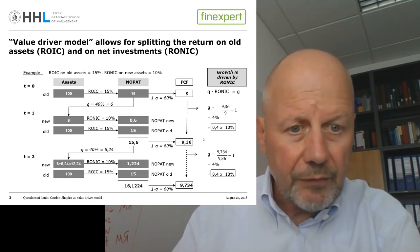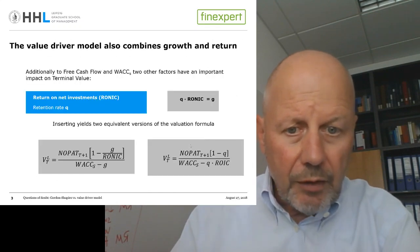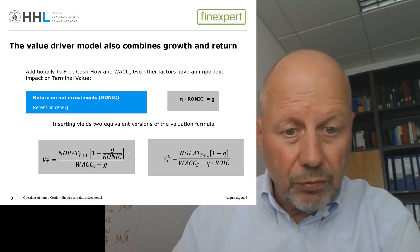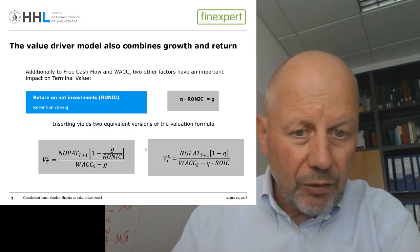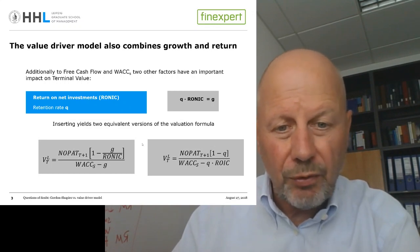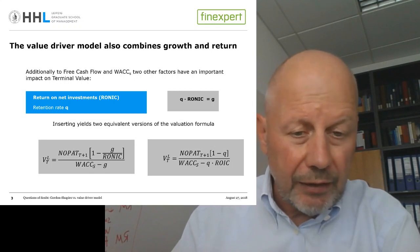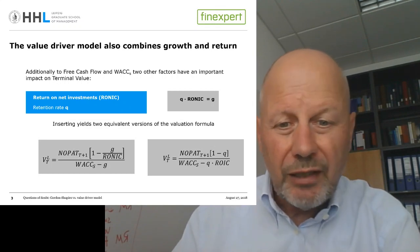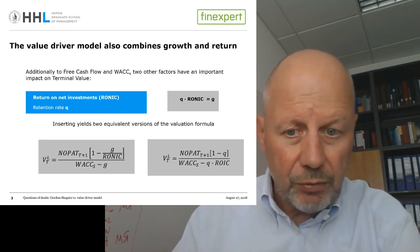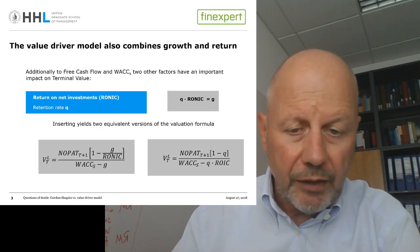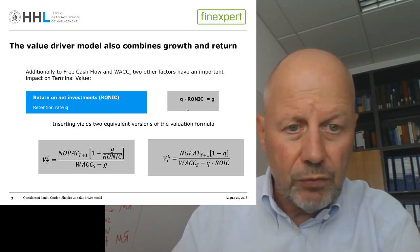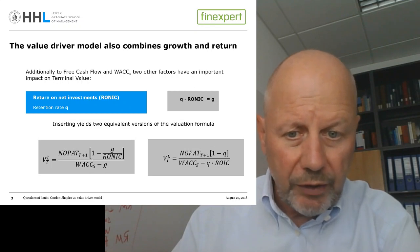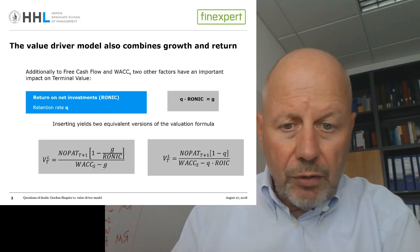The Value Driver Model's valuation equation is very similar to the Gordon-Shapiro model. The only change is that we replace ROIC with RONIC. All other features we discussed for the Gordon-Shapiro model — including the famous triangle sanity check for the growth rate — are also applicable. The most common version is NOPAT times (1 minus retention rate), i.e., free cash flow over (WACC minus g), replacing the retention rate q by the ratio of growth over RONIC.